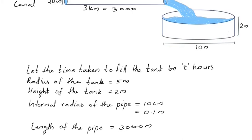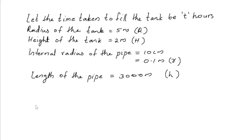Let's take the radius of the tank and height of the tank as capital R and H respectively. And the internal radius and length of the pipe are small r and small h respectively. Now, the volume of the cross section is πr²h, and the volume of the tank is πR²H.